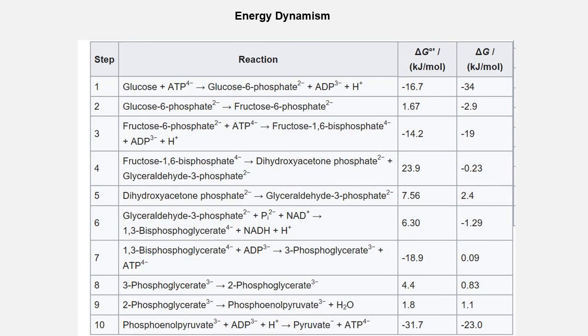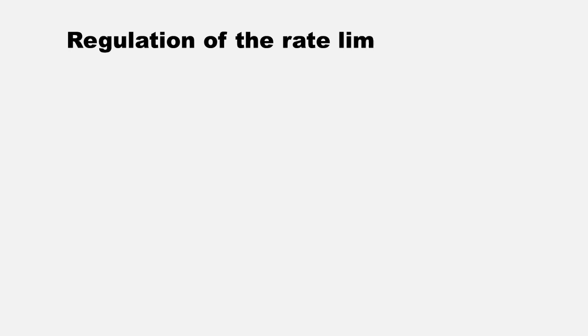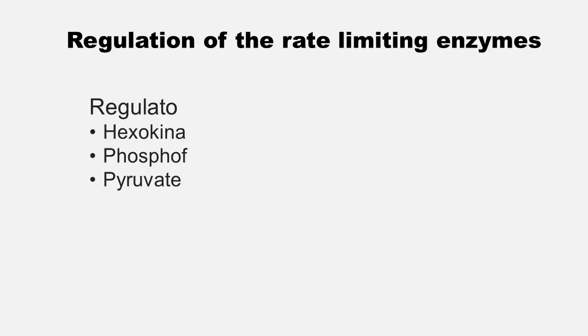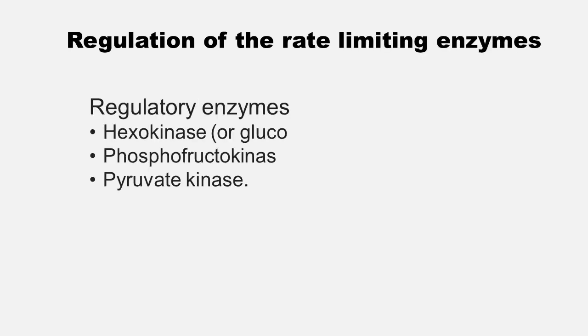This table gives you a brief idea of energy transmission by each step of glycolysis in kJ per mole. There are three key regulatory steps in glycolysis, which are catalyzed by hexokinase or glucokinase in the liver, phosphofructokinase, and pyruvate kinase.